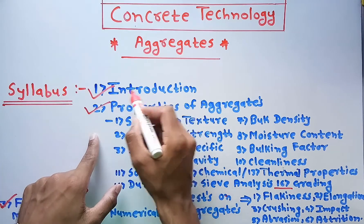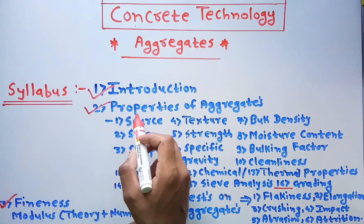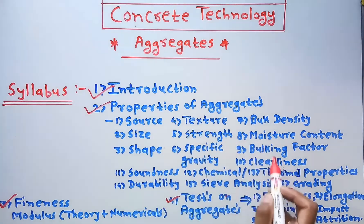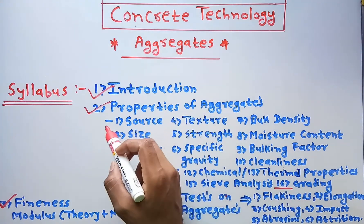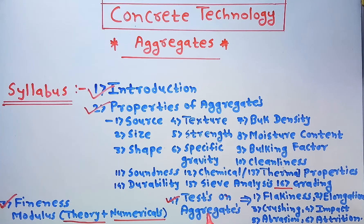We will start with the introductory part about aggregates, then we will see the various properties of aggregates. As you can see here, around 16 types of properties we are going to cover in our syllabus. Then we will move towards fineness modulus, studying theory along with numericals. Finally, we will study tests on aggregates including flakiness, elongation, crushing, impact, abrasion, and attrition tests.